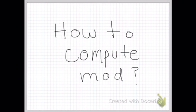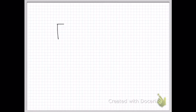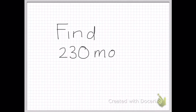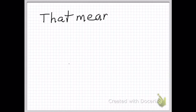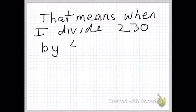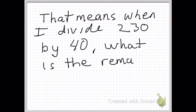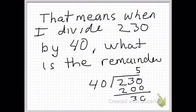How to compute mod? We'll try several methods. For example, find 230 mod 40. That means when I divide 230 by 40, what is the remainder?